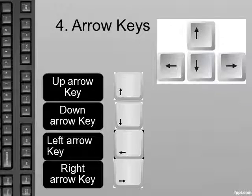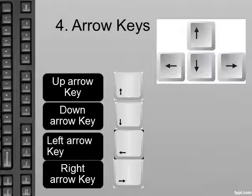There are 4 arrow keys that help to move the cursor on the screen. The up arrow key is used to move the cursor up. The down arrow key is used to move the cursor down. The left arrow key is used to move the cursor left. The right arrow key is used to move the cursor right.